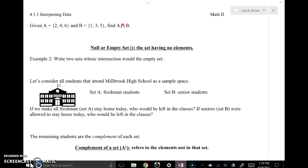So right here, they want us to find the intersection, that's all the things that set A and set B have in common. When you go to look at set A: 2, 4, and 6, set B: 1, 3, and 5, there is nothing in A that matches anything in B.